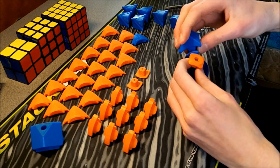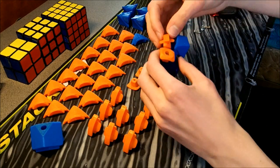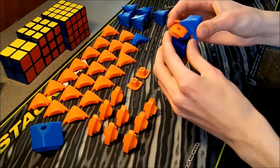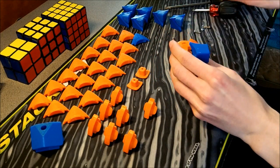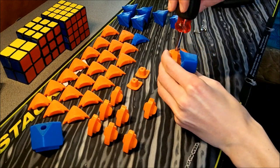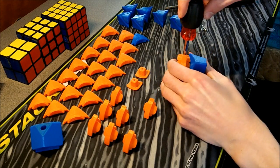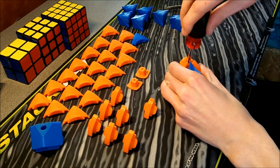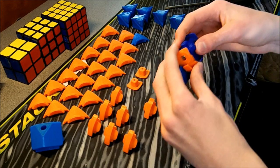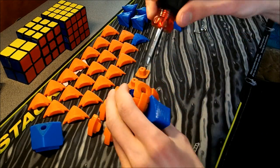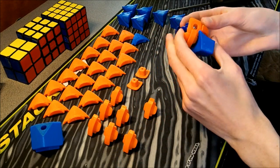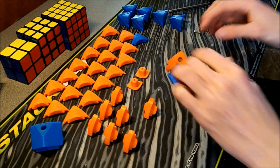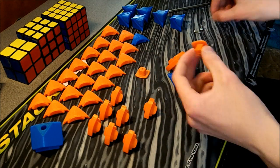And then we can put in one of the corners and 2 edge pieces. Okay, now that we have that, we can put in another core.